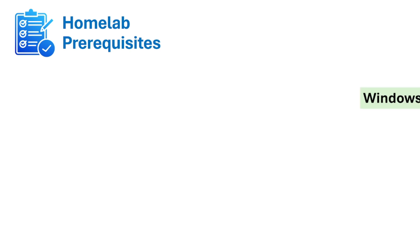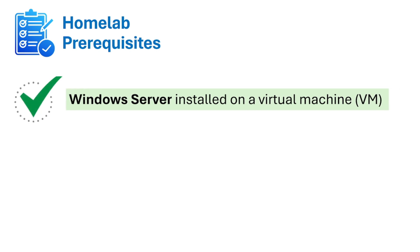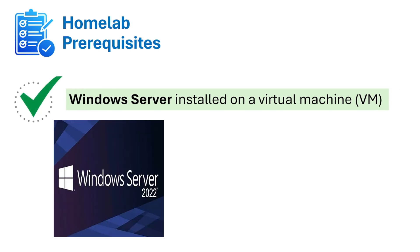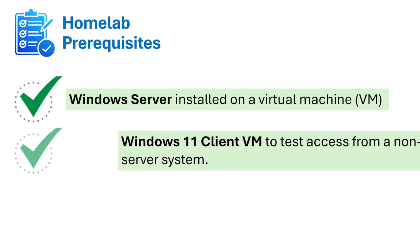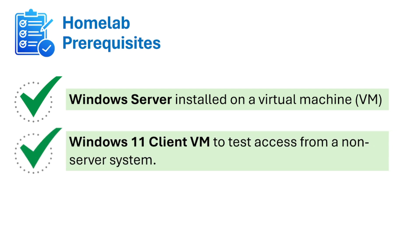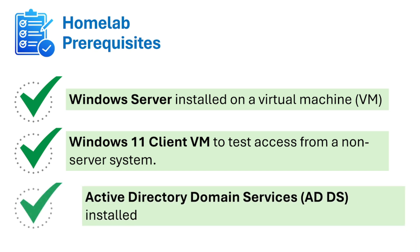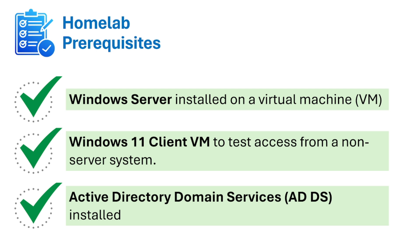Before we get started with home lab activities, here are the prerequisites: first, you need Windows Server installed on a virtual machine — it can be Server 2022 or 2025. Then you need a Windows 11 client VM to test access from a non-server system. Since Windows 10 is approaching end of life, I'll be showing all home lab activities on Windows 11. You also need Active Directory tools installed on your Windows Server.